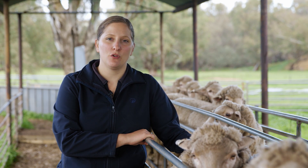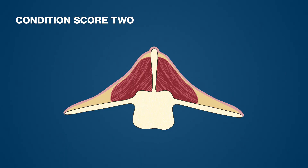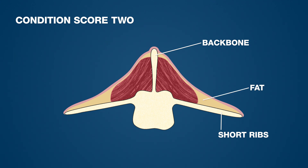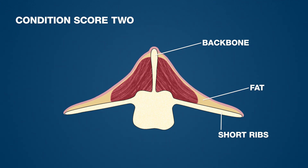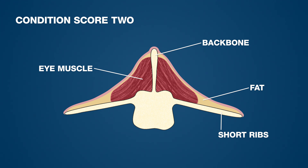Condition score 2 will still have no fat but will have a small amount of muscle along the backbone. You'll still be able to feel in between each of the short ribs and backbones but it won't feel as bony. There will still be a definite hollow from the backbone to the short ribs, but not as much as condition score 1 because the eye muscle has filled out a little. This is the least acceptable condition for thrift. It can be acceptable for dry sheep when feed is short, but it's a clear indication that nutrition requires attention.